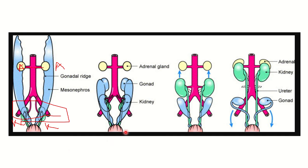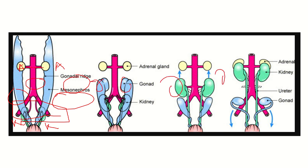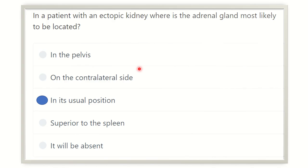If any migration failure occurs — for example, if the kidney gets stuck in the pelvis or at any other point along its ascent — the adrenal gland has no reason to change its position. The adrenal gland is fixed, so its position will not be changed regardless of where the kidney ends up.